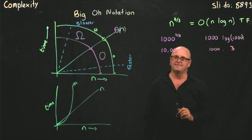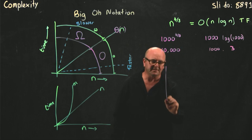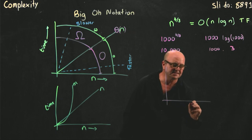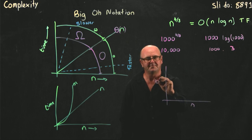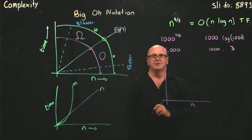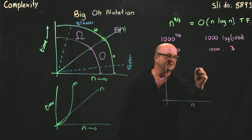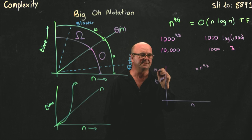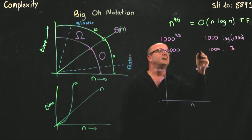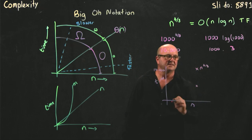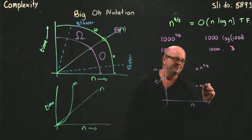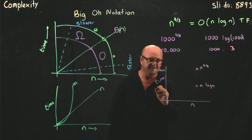So, if we plot our graph here. Here's n. Here's time. We would say that n to the 4 thirds is going to be up here at 10,000.